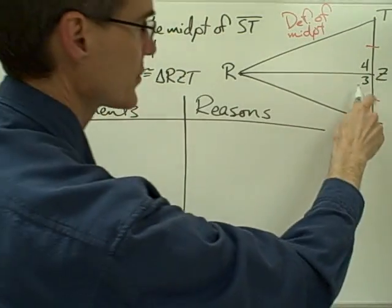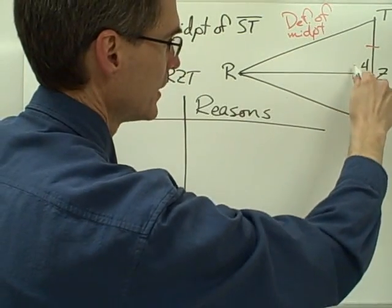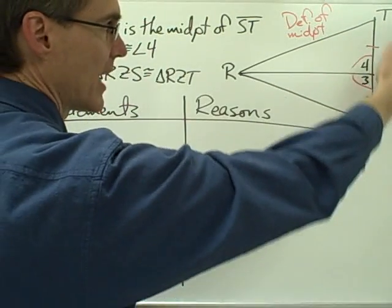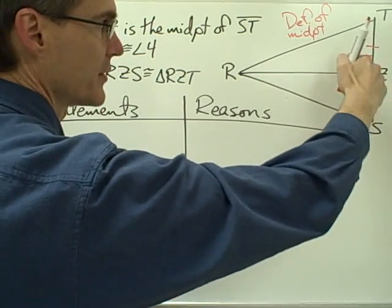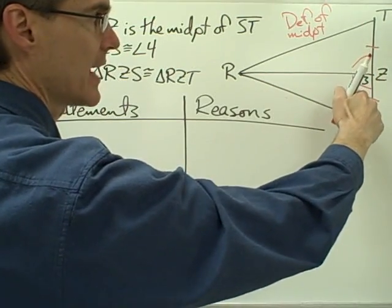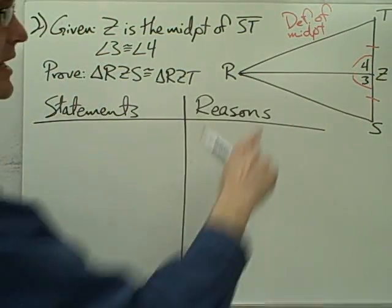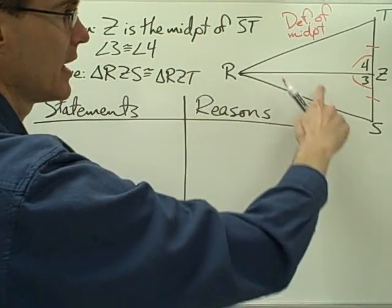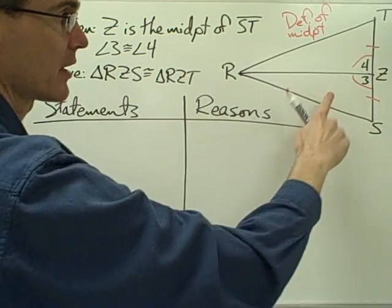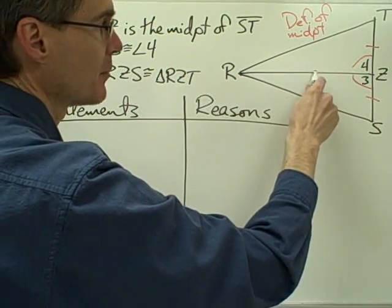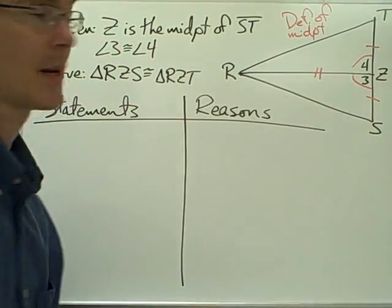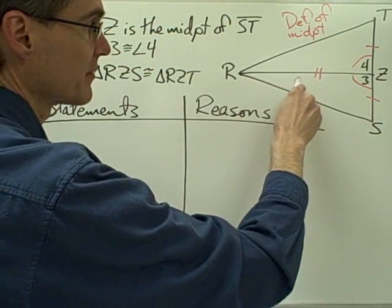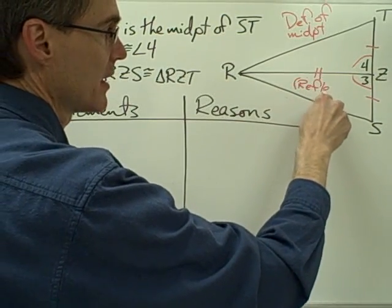Angle three is congruent to angle four, so I'm told this angle is congruent to this angle. I have this side on this triangle congruent to this side on this triangle, and this angle of this triangle congruent to this angle of this triangle. And once again I have a common side for these two triangles — segment RZ is a side in this triangle and also a side in this triangle. I'm going to mark that side and say it's congruent to itself, using the reflexive property.